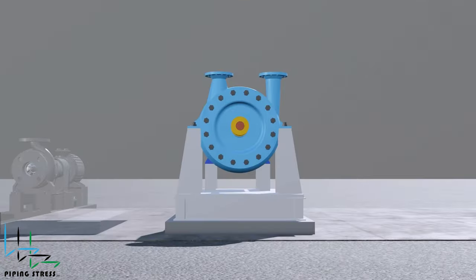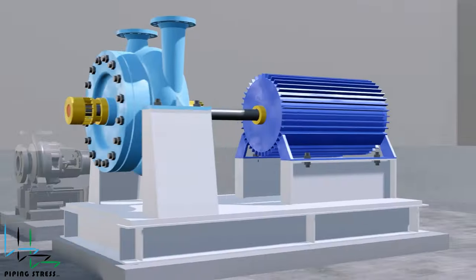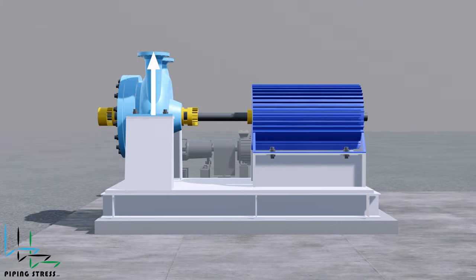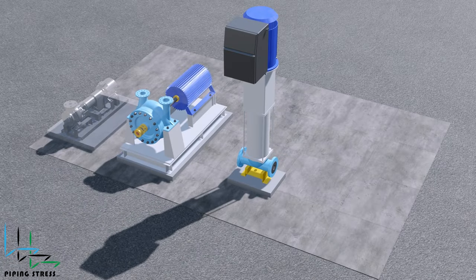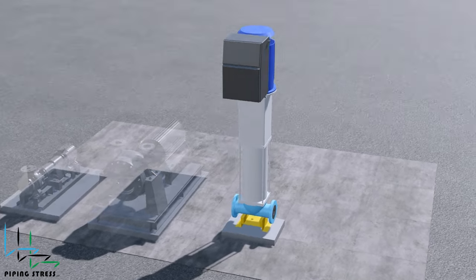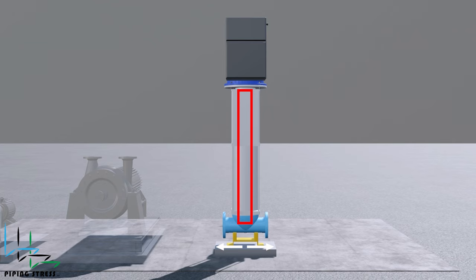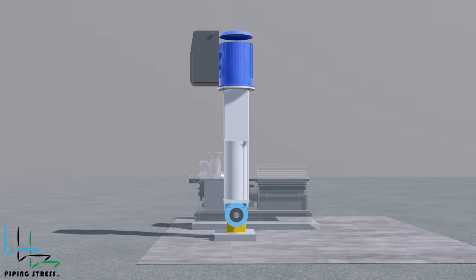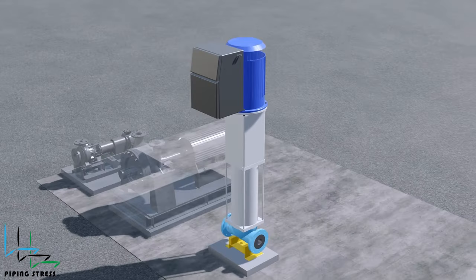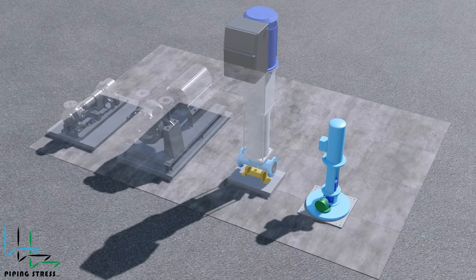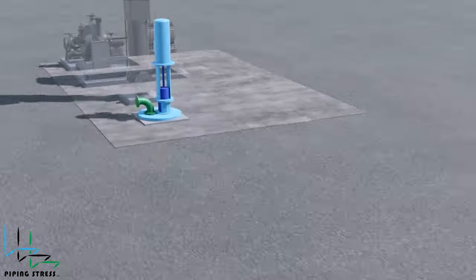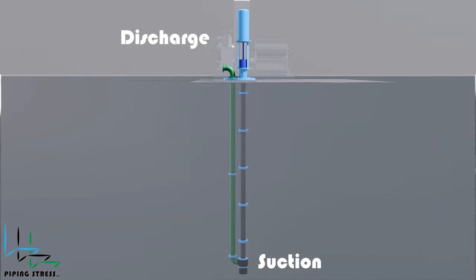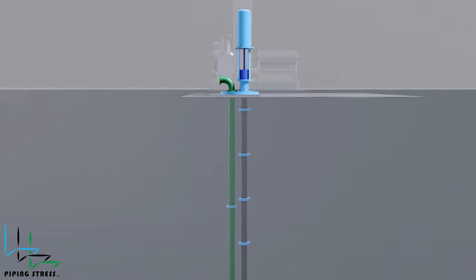The thermal expansion directions of between bearing pumps vary from each other. For a radially split pump, this is the expansion direction. Vertical inline overhung pump expansions are perpendicular to the shaft. For vertical suspended pumps, expansion is valid only for the discharge nozzle, as the suction nozzle is dipped into the basin.